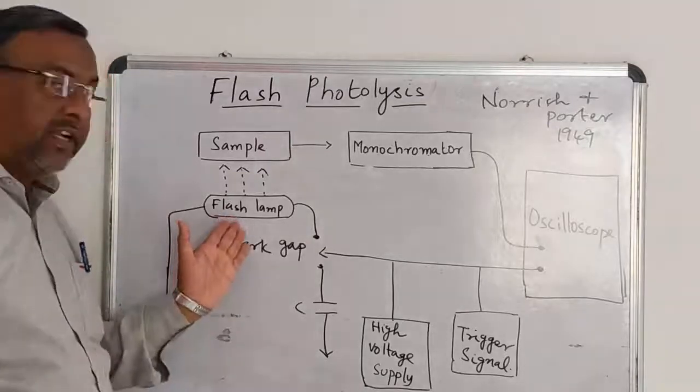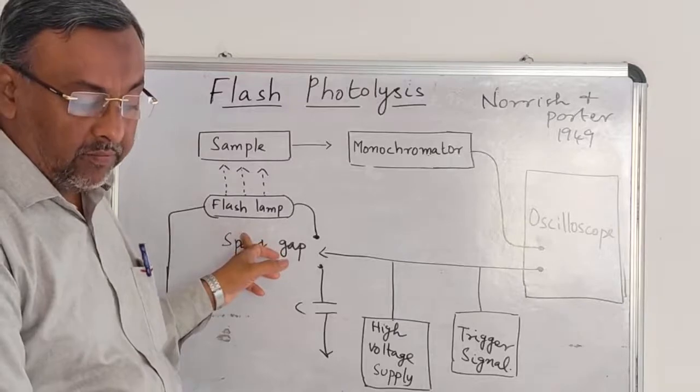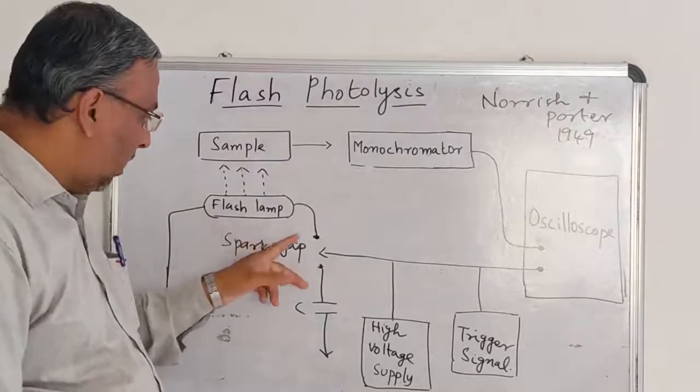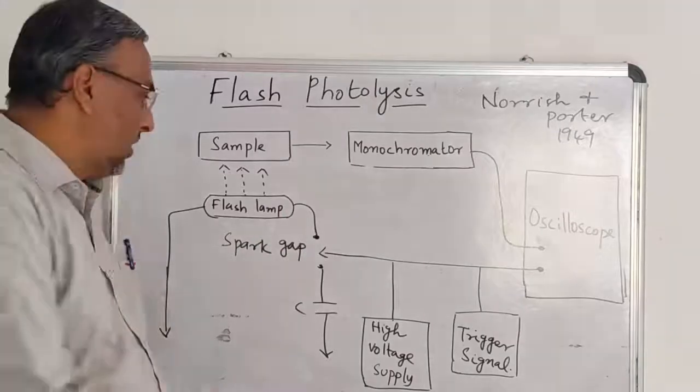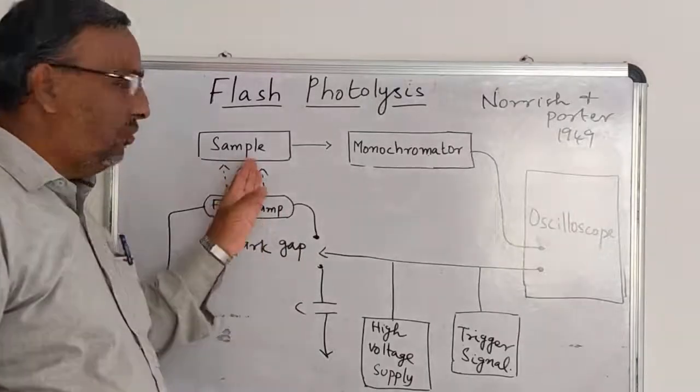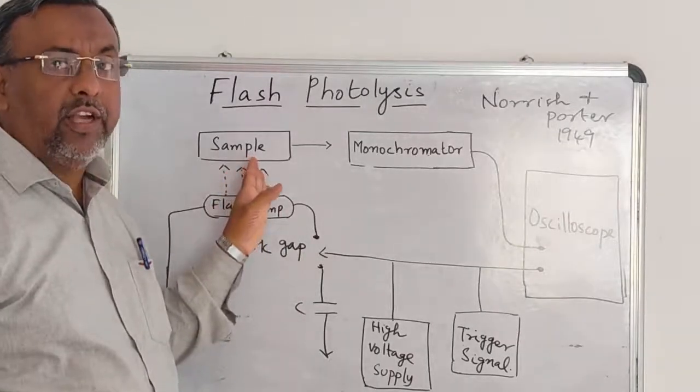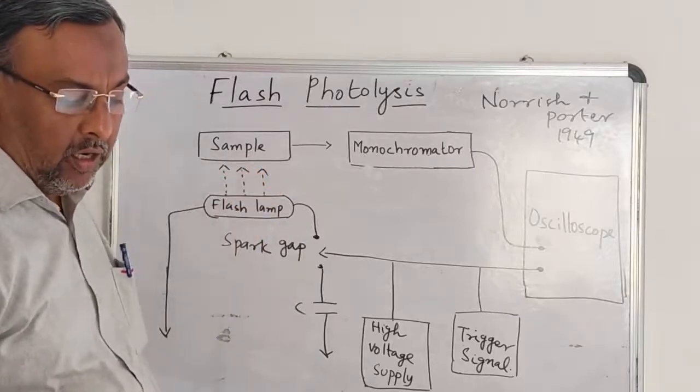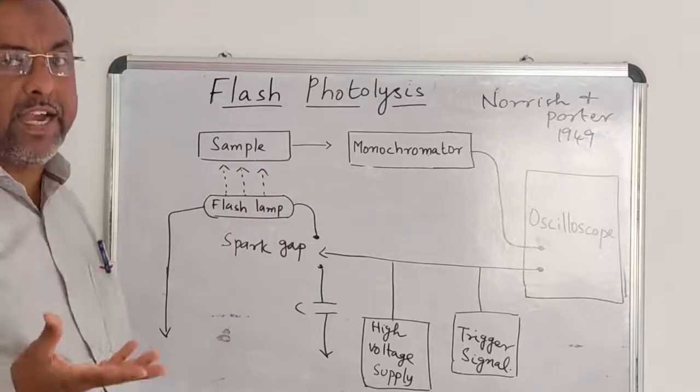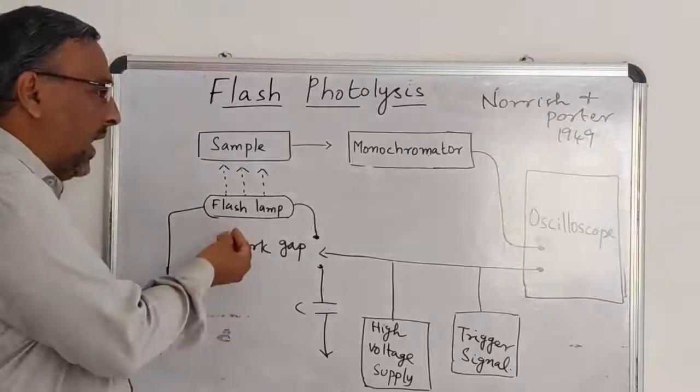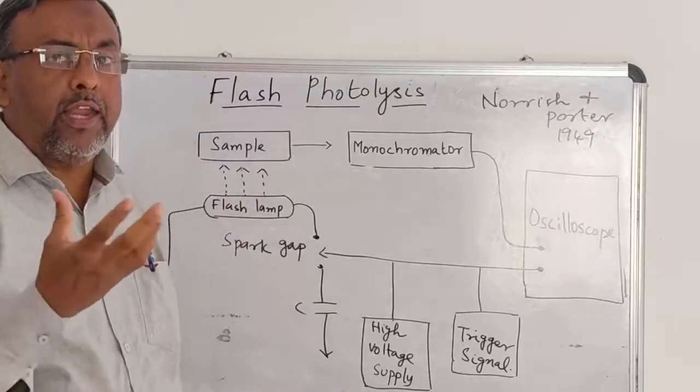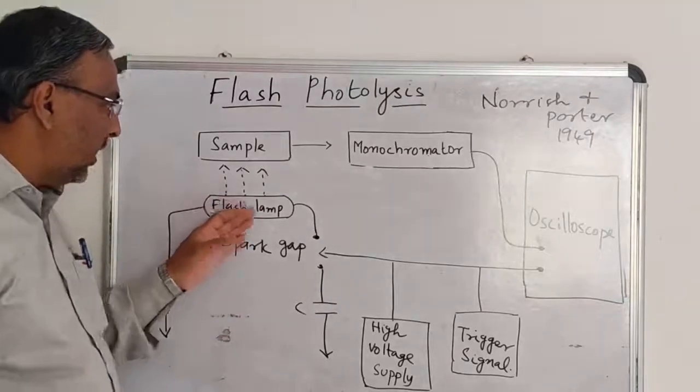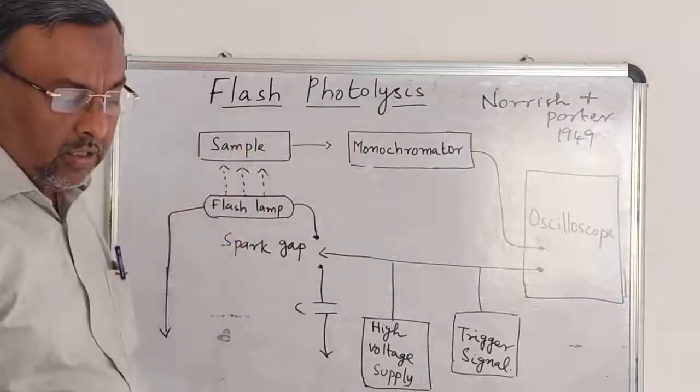A high intensity of light is formed. A high current is discharged for about a few microseconds. This flash lamp, the flash is incident on the sample for about a few microseconds, a few nanoseconds.